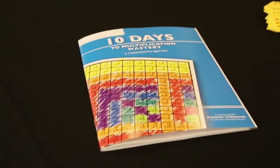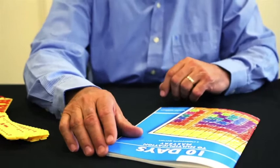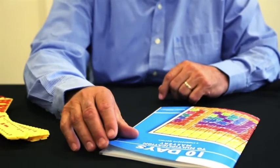Additionally, when multiplication wrap-ups are combined with the new 10 Days to Multiplication Mastery Workbook, automatic recall can be achieved even faster.